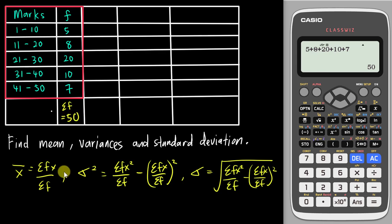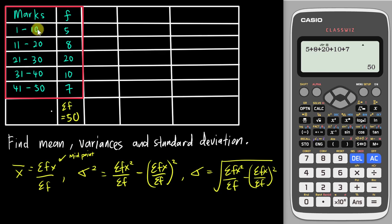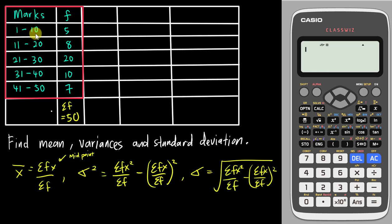You'll notice the table doesn't have an x column — x here is called the midpoint or mid-interval. For each class interval you need to find the midpoint. The easiest way is lower limit plus upper limit, divided by 2. So for the first interval: 1 plus 10 equals 11, then divide by 2, giving you 5.5. That is the x value.